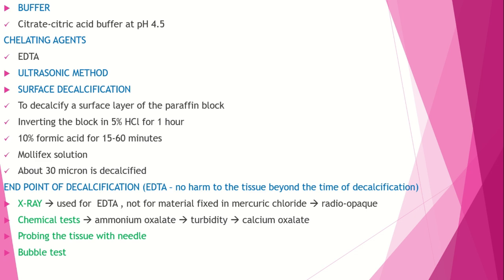In summary, decalcification uses acids and other methods: three fluid compositions for acid decalcification, buffers, chelating agents, surface decalcification, and the electrophoretic method. End point of decalcification is determined by x-ray, chemical test, probing, and bubble test.